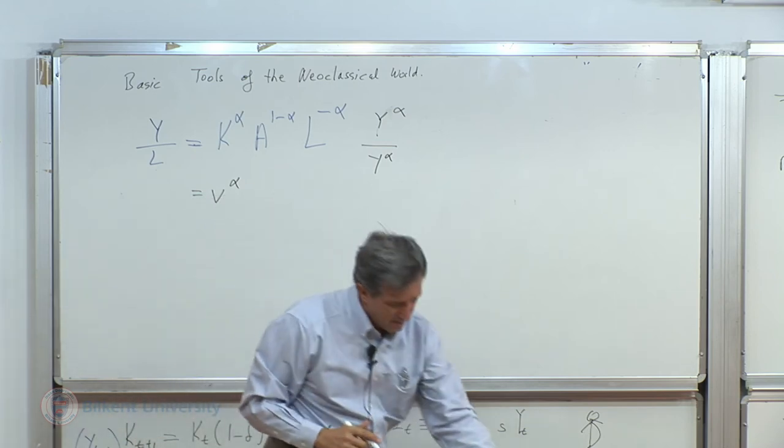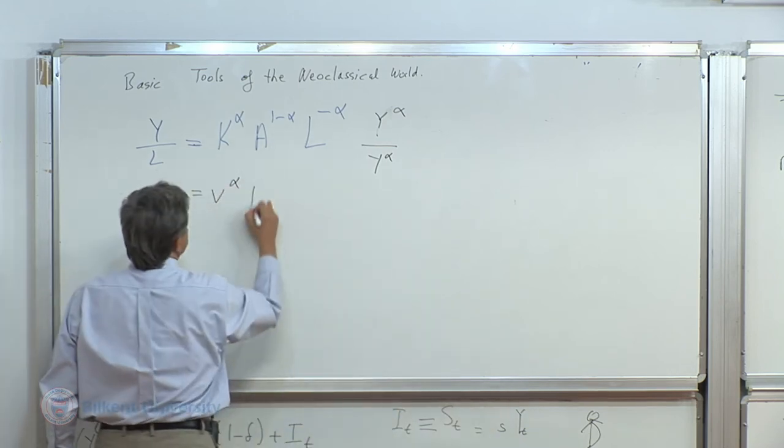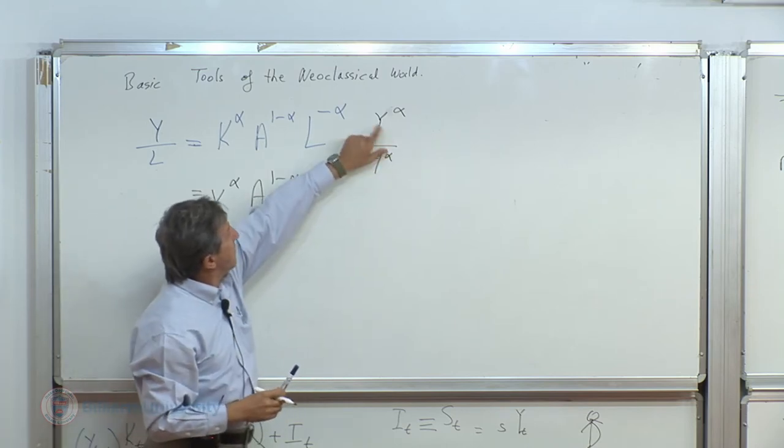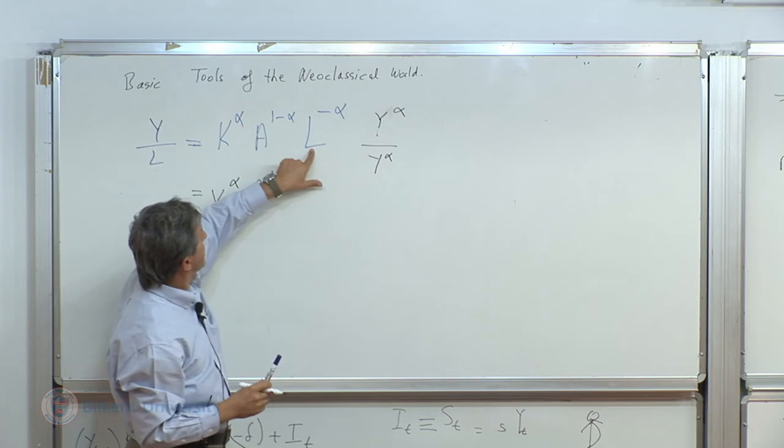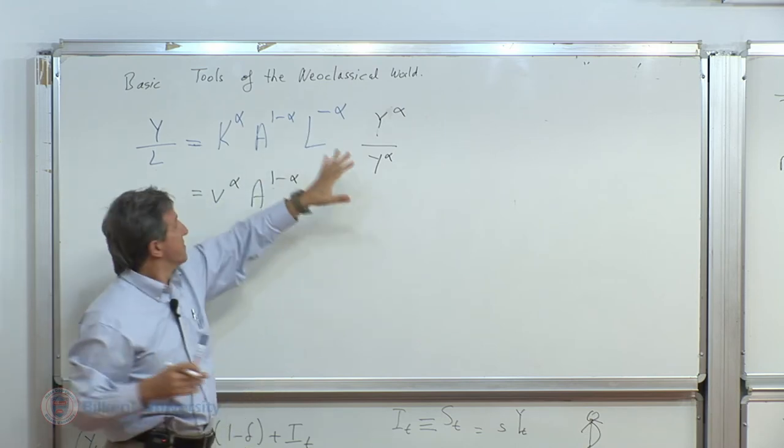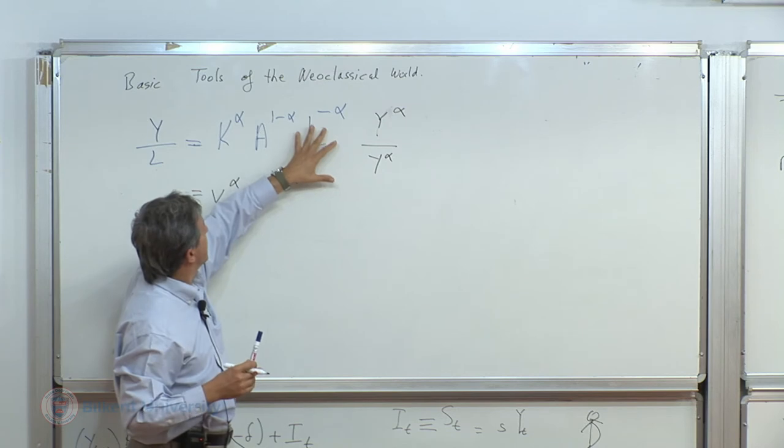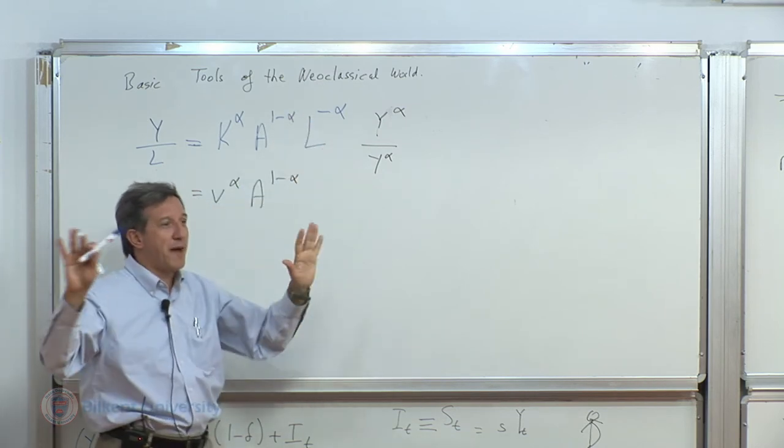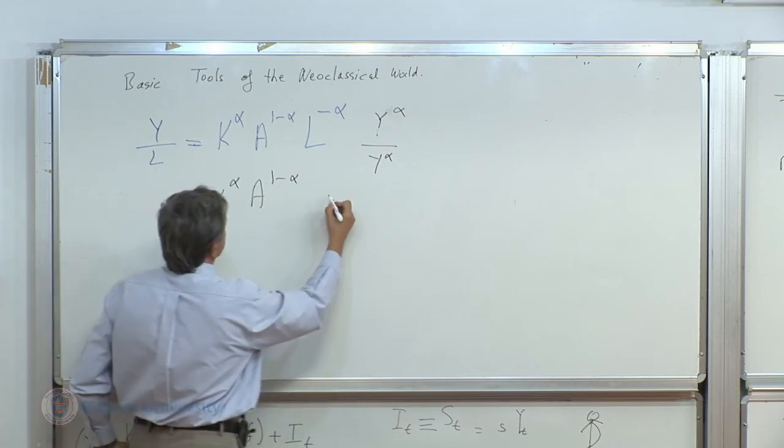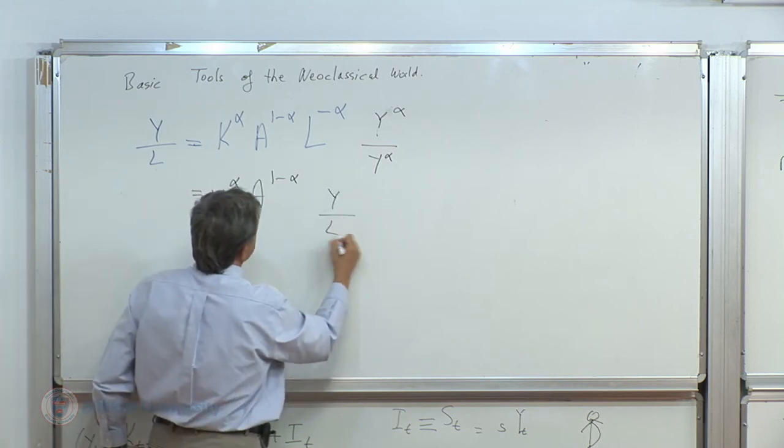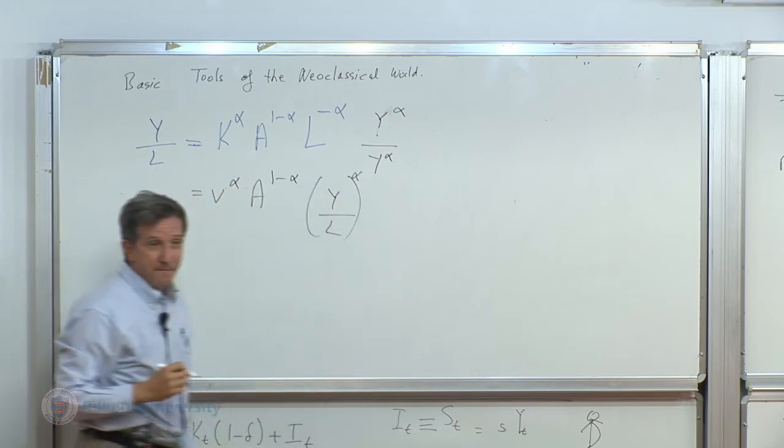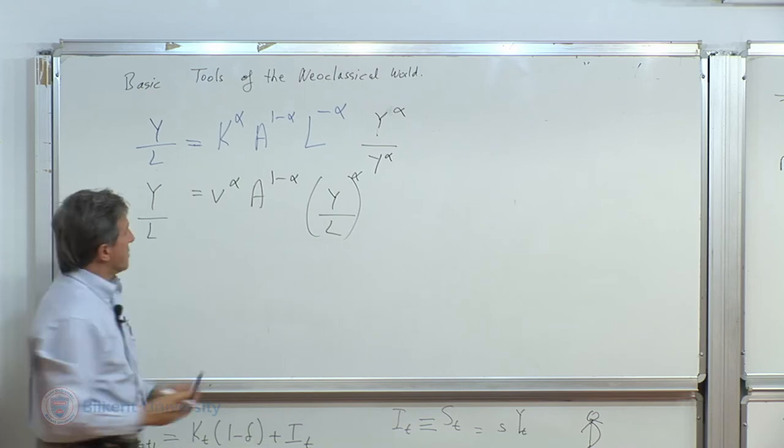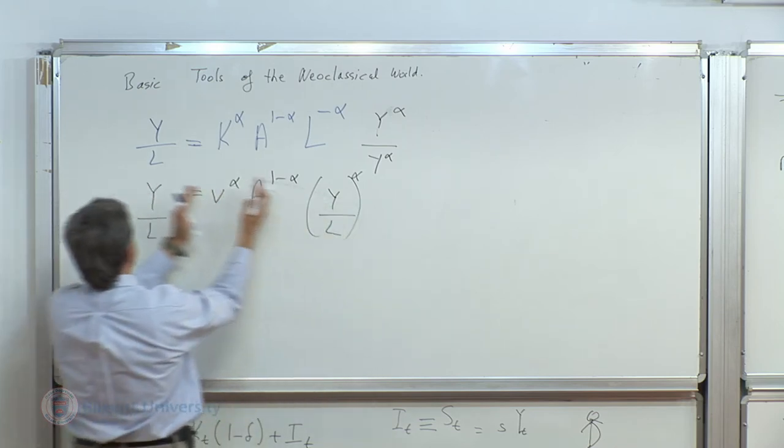All right. And I am keeping this A to the power 1 minus alpha. I have got rid of this. I have Y to the power alpha. And L, I behave like a high school arithmetic teacher here, I realize. But we are going to come to the economics of this, I promise. But let's do the math correctly now. So I have here Y divided by L to the power alpha. And this is equal to Y over L. So I move this character over this side, I say, Y over L to the power 1 minus alpha, V to the power alpha, A to the power 1 minus alpha.